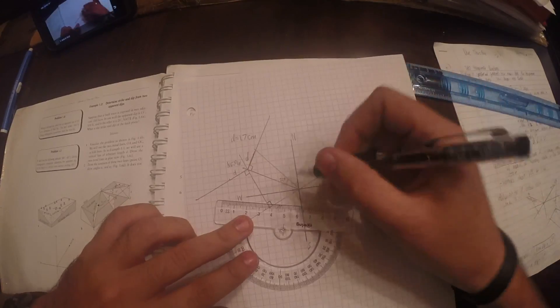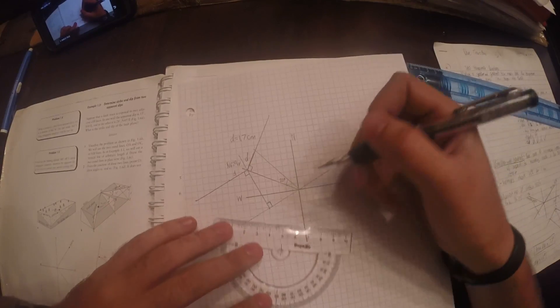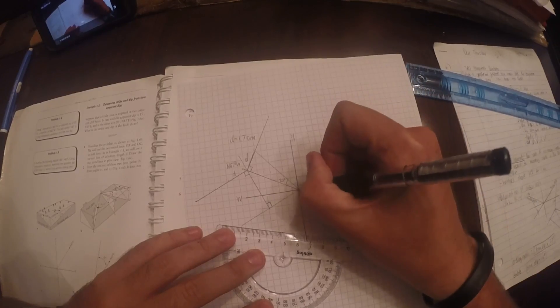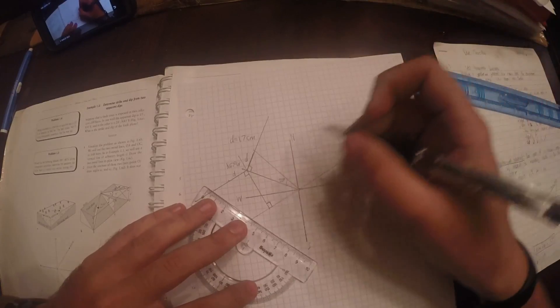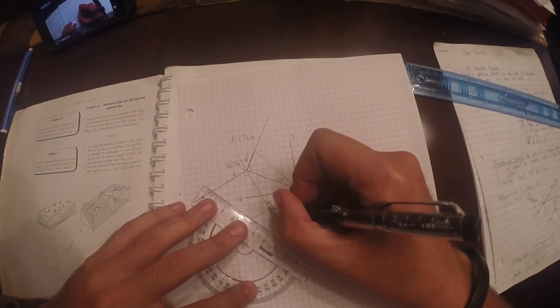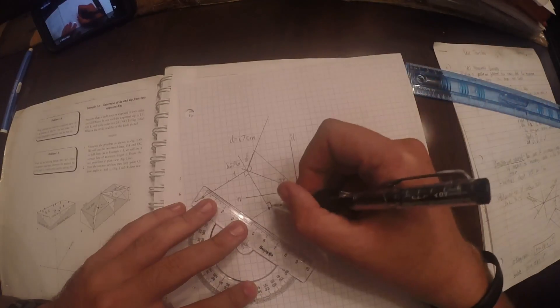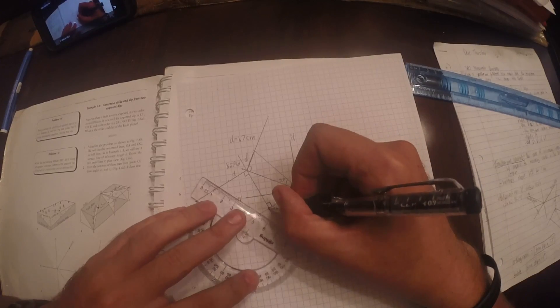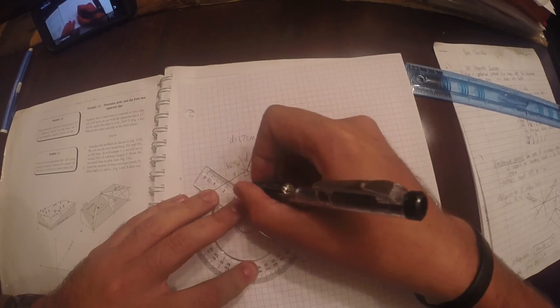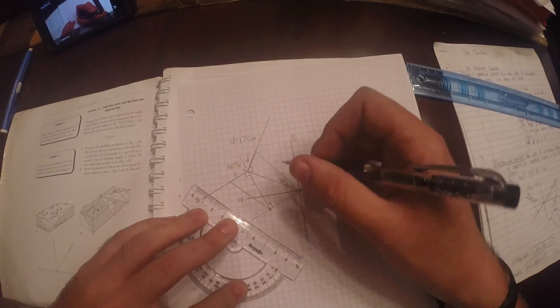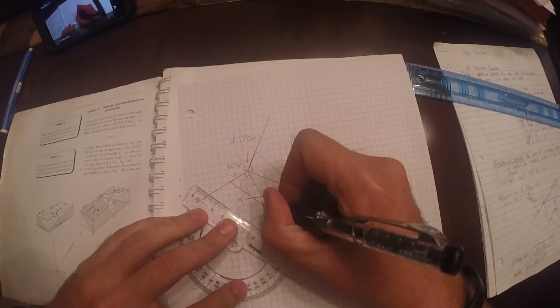Then, from down here again. I know there's a lot of lines, but from your origin. Actually, no. Not from your origin. Sorry. From this point here, the original 90 degree mark. You're going to draw a line from there to the end of distance D. And then, you want to measure this angle.